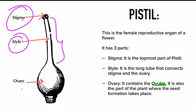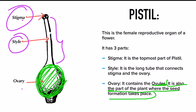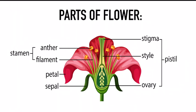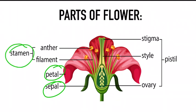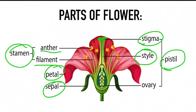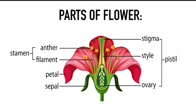The third part of the pistil is the ovary — the ball-like structure at the base. The ovary contains ovules, which are cells necessary for reproduction in plants. The ovary is also the place where seed formation takes place. To summarize, a flower has four parts: sepal, petals, stamen (with anther and filament), and pistil (with stigma, style, and ovary). You need to draw and label this diagram.